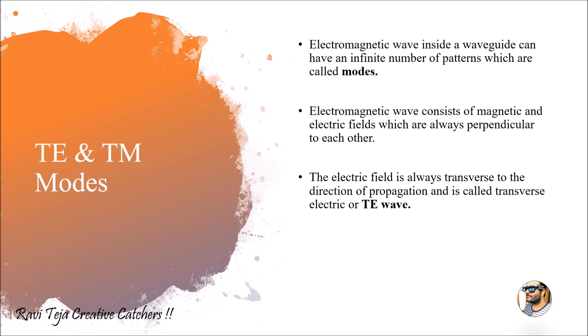A TE wave can also be called as a transverse electric wave or transverse electric mode, where the electric field is always transverse or perpendicular to the direction of propagation. In a transverse electric mode, the electric field will always be trying to move outside of the waveguide, and the magnetic field, which is perpendicular to the electric field, always tries to move along the propagation of the waveguide or along the z axis.